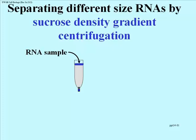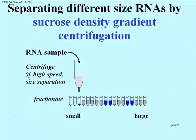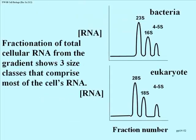Under ultracentrifugation, different sizes or masses of RNA experience differential resistance, so only the largest RNA molecules penetrate the highest concentrations of sucrose. After centrifugation, we puncture the bottom of the plastic tube to drip material out and collect it in a series of test tubes — this is called fractionating the gradient. We can then analyze each tube for the amount of RNA present. Material collected from the bottom right after centrifugation contains the larger molecules, becoming progressively smaller toward the top. We can plot RNA amount per tube on a graph.